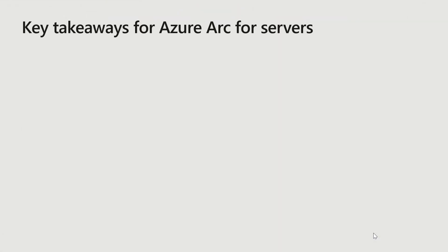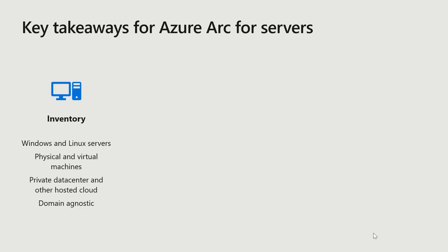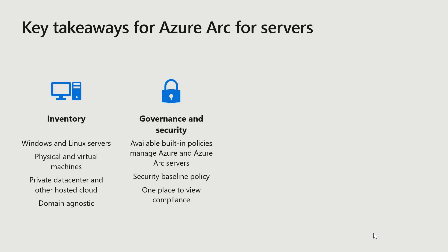Here are some key takeaways for Azure Arc for Servers. Today you can use it for inventory — see all your Windows and Linux servers, whether they're physical or virtual, in a private data center or hosted cloud. It's completely domain agnostic — even in enterprises with multiple domains and forests where some aren't trusted, Azure Arc doesn't care about different domains. You also get governance and security — the policy capabilities you know from Azure can be used for Azure Arc servers too, including security baseline policy templates to ensure all resources are compliant regardless of where they run.